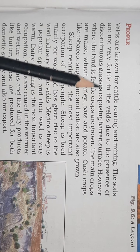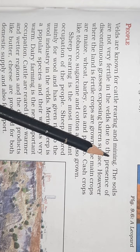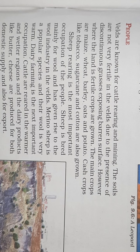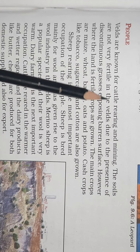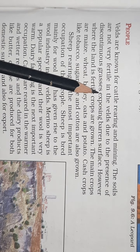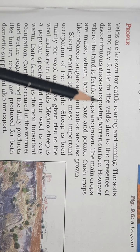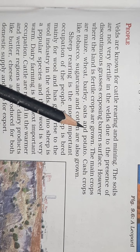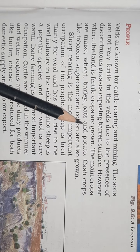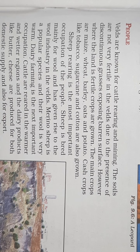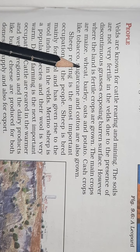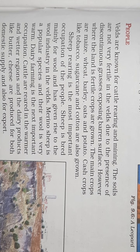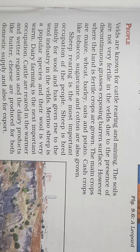The Velds are known for cattle rearing and mining. The soils are not very fertile compared to the Prairies, which is why cattle rearing and mining are prominent here. However, where the land is fertile, crops such as maize, wheat, barley, oats, and potatoes are grown. Cash crops like tobacco, sugarcane, and cotton are also cultivated in fertile areas.